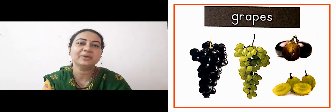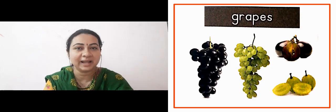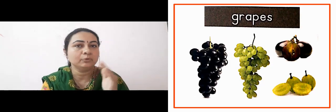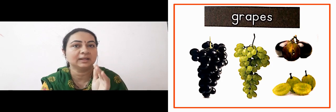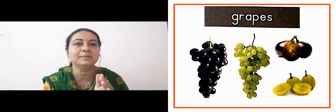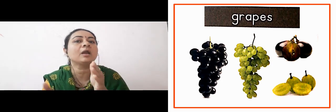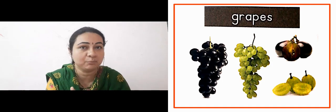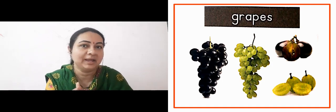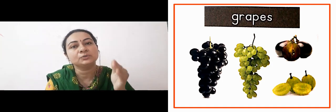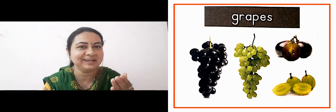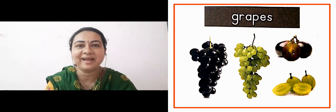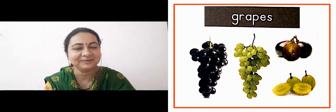The next lady is showing us grapes. Two types of colors are shown for grapes — a dark purple or you can say black color, and the other is green color. It is also shown cut.